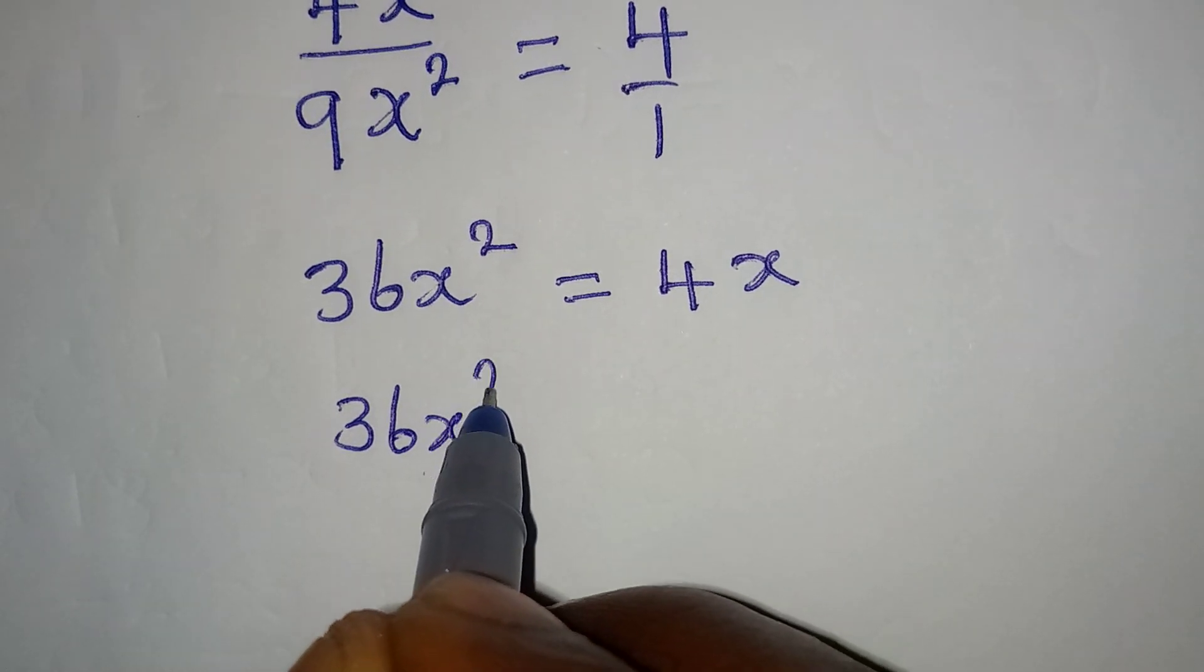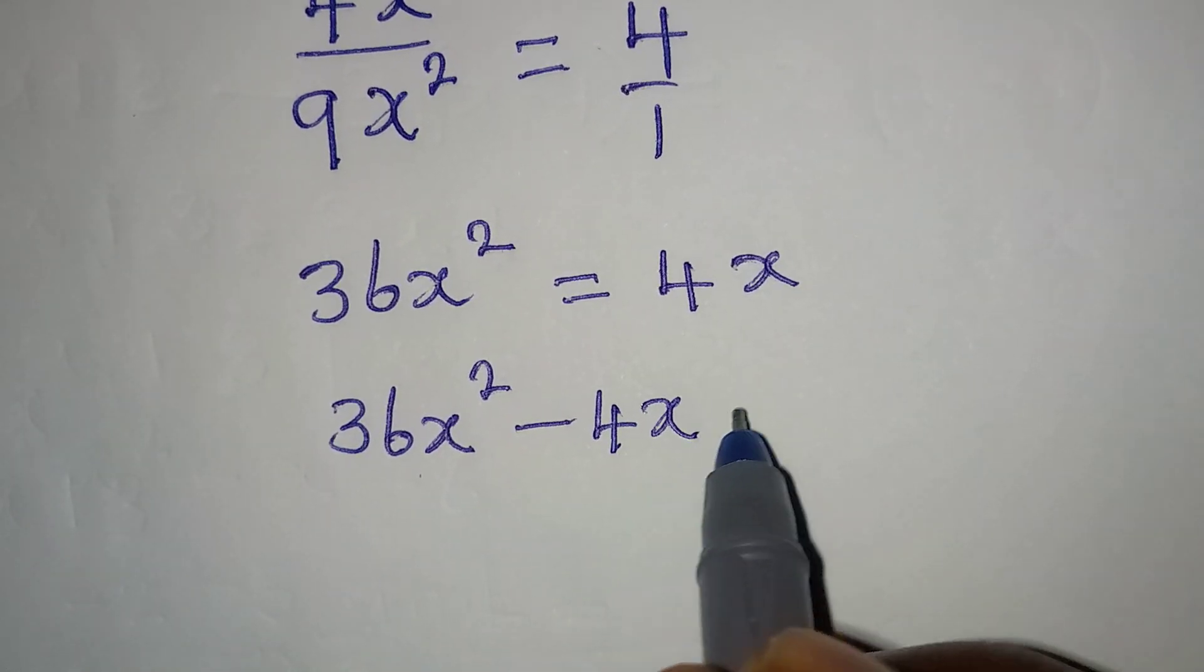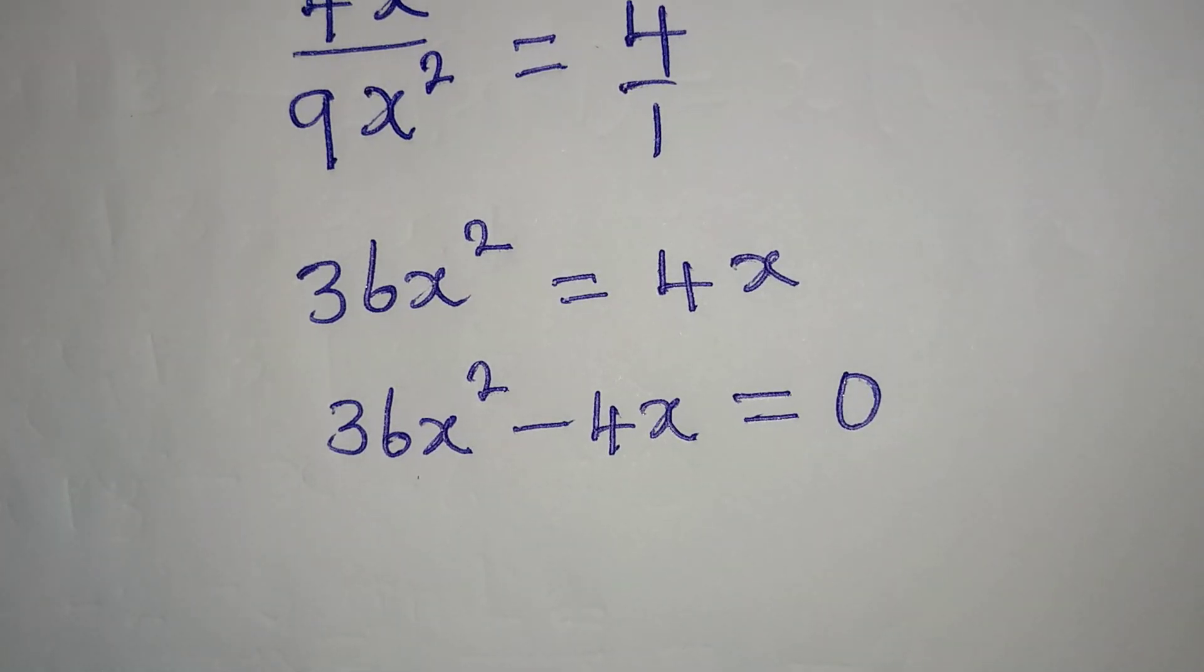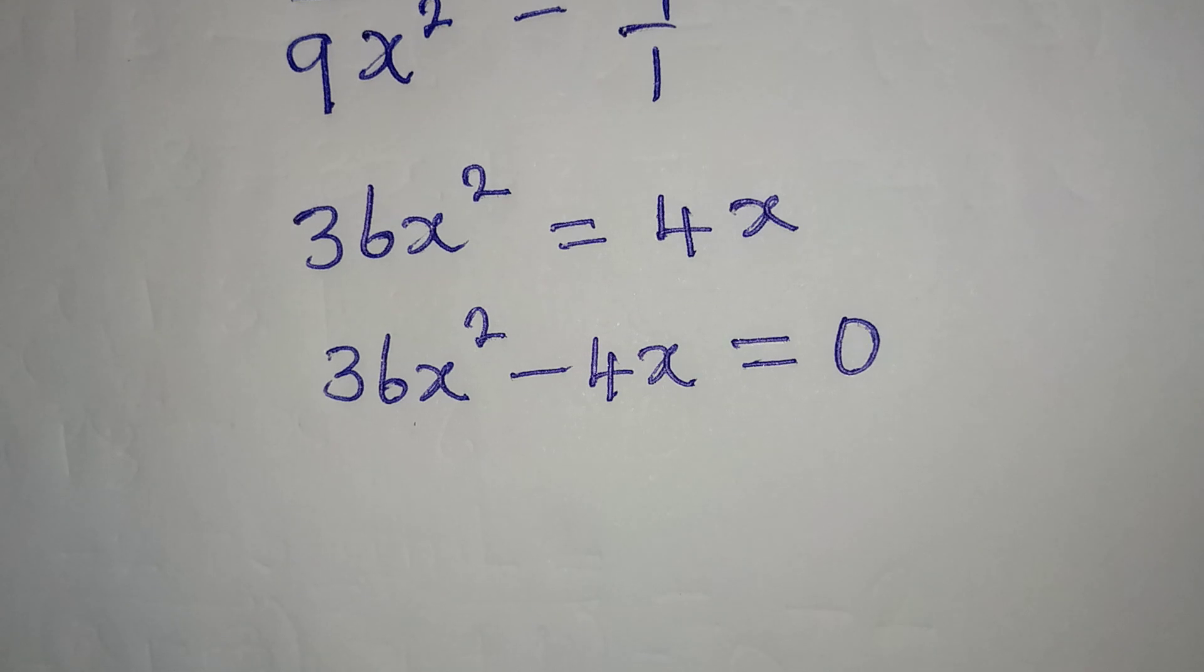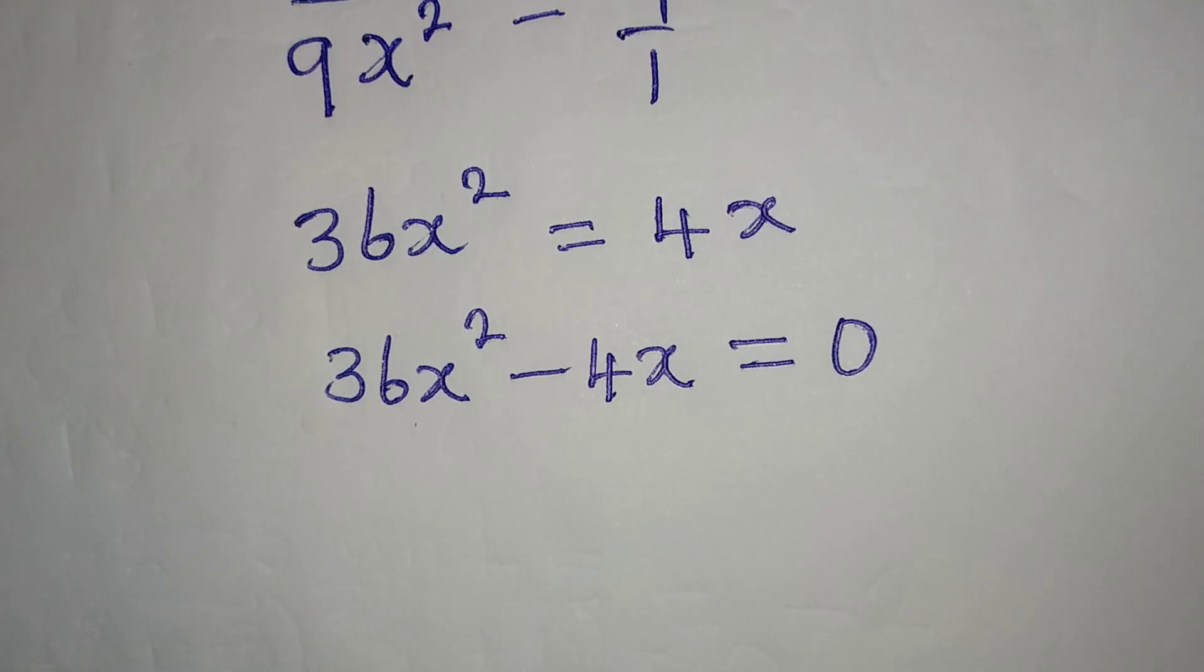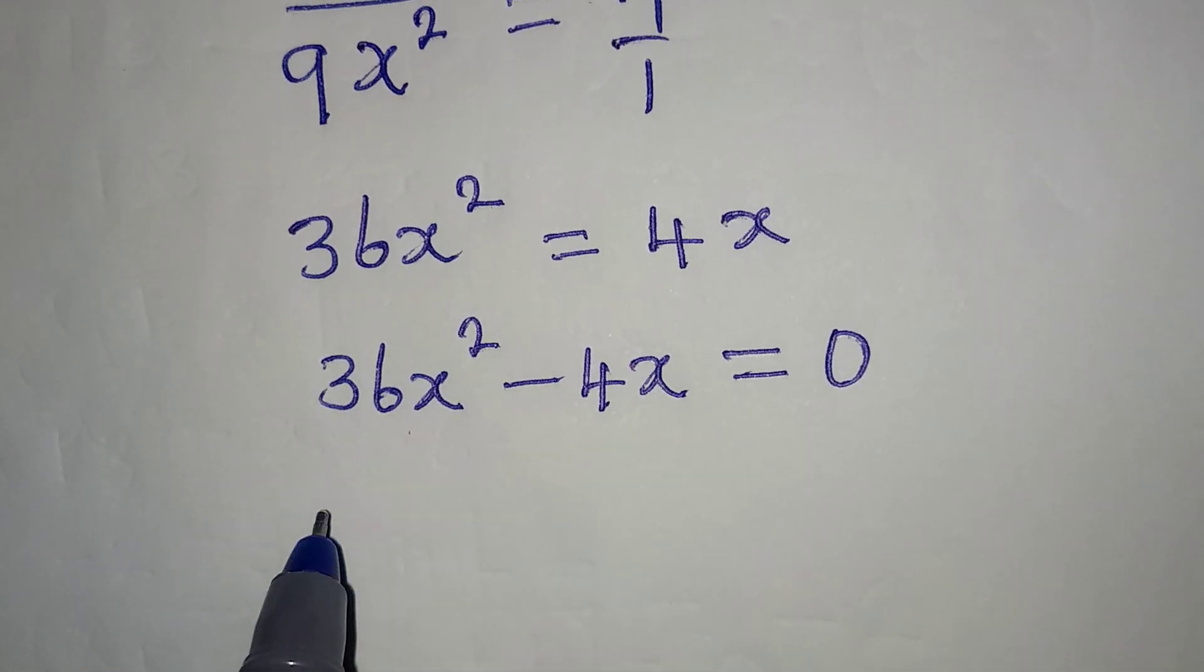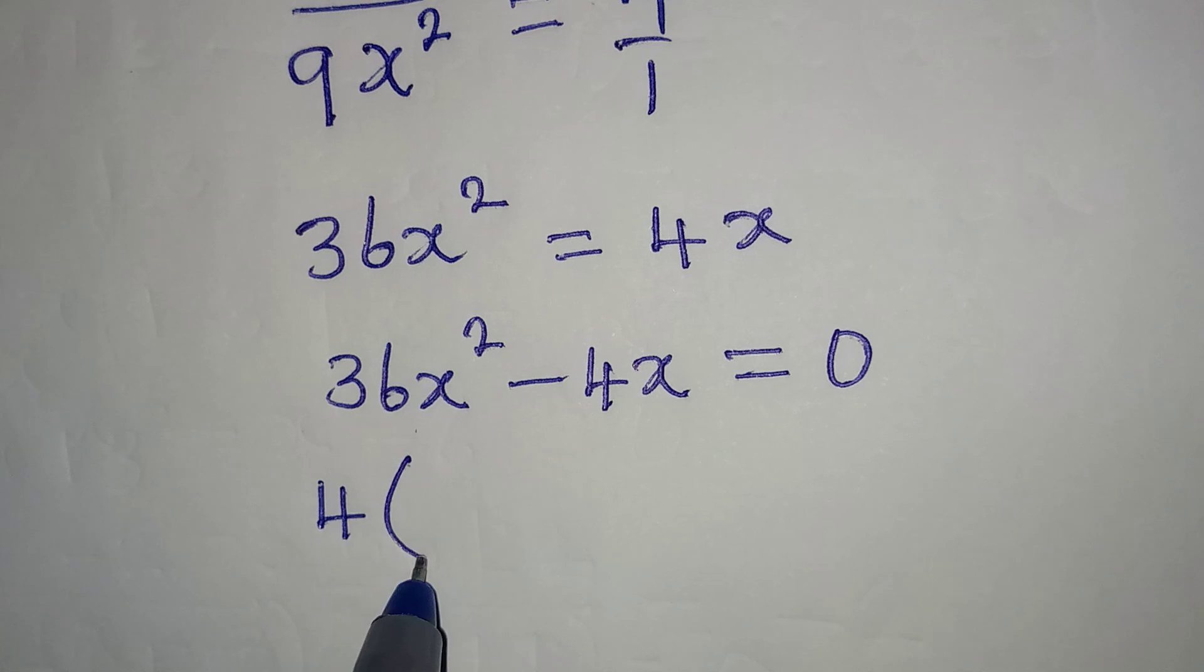So we have 36x² - 4x = 0. And if this is the case, then I can factor out 4x, because 4 can be found in this and it's there.